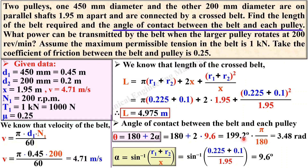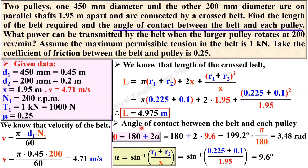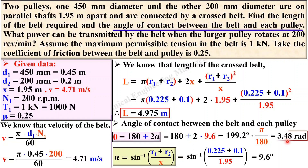So the angle of contact is 3.48 radians, or equivalently 199.2 degrees. Keep in mind that in a cross belt drive, the contact angle θ is exactly the same on both the smaller pulley and the larger pulley.